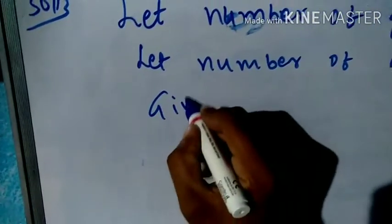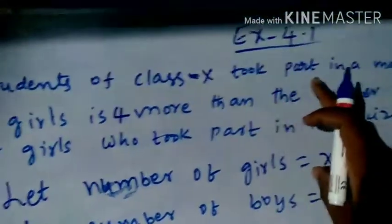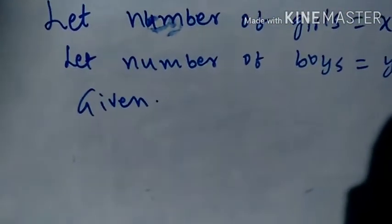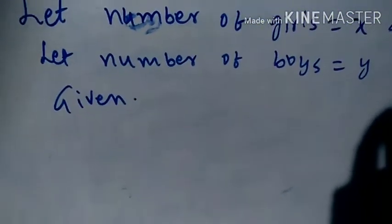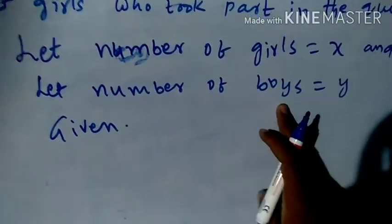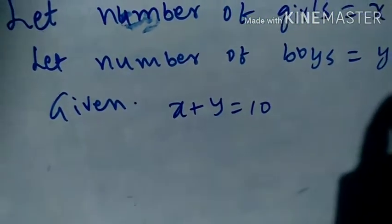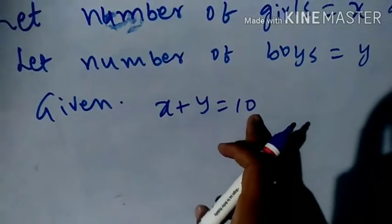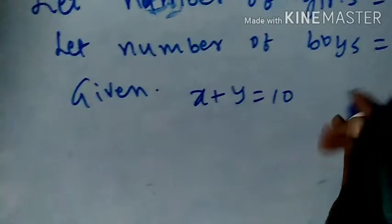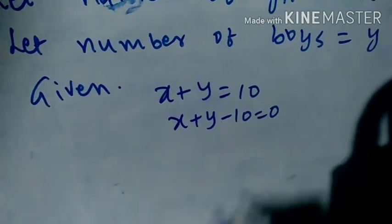Given: 10 students of class 10 took part in the mathematics quiz. So the total number of students is 10. That means girls plus boys is equal to 10. Now transpose 10 to the LHS: x plus y minus 10 is equal to 0.